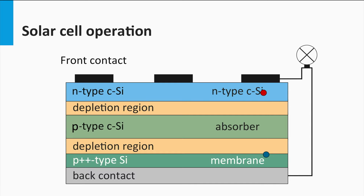You don't have to understand yet why this happens — I will explain this in detail next week. The charge carriers have to be collected at the contacts. In this example, the contacts are connected with a load, in this case a lamp. The electron will move through the load back to the solar cell. Both charge carriers recombine at the metal p-layer interface.